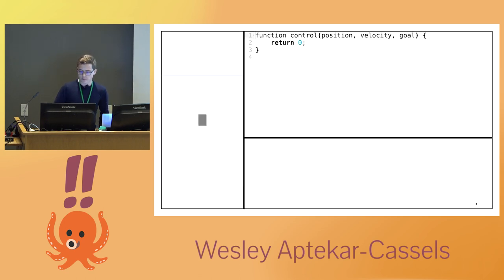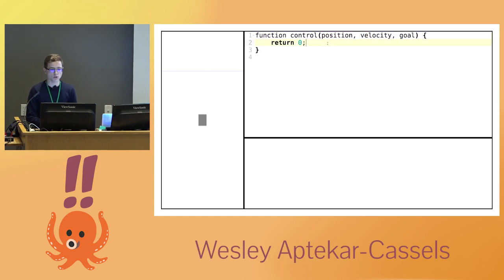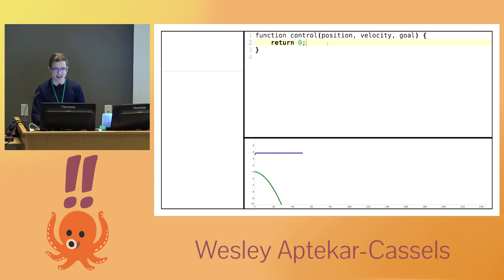So we're going to open up this little live coding system. We have a gray box here which is our elevator, and then we have the blue line which is where we want to be. We have a function to control it — we get passed in the position, the velocity, and the goal, and we can return a force to apply to the elevator. If we just run this, it's a very scary ride — not quite what we want to happen.